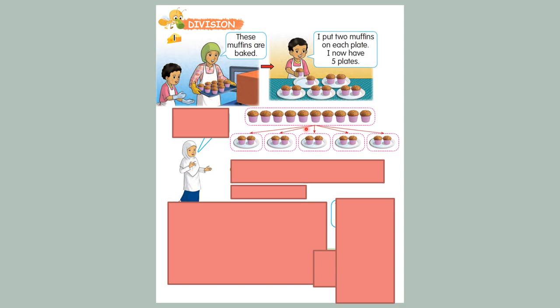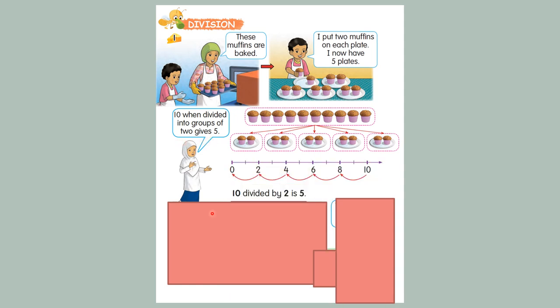Each plate have two. Then have five plates — 1, 2, 3, 4, 5. 10 when divided into groups of 2 give 5. Means 10 divided by 2 is 5.